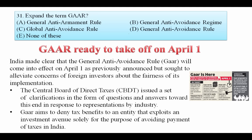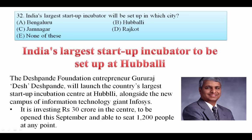Expand the term GAAR. GAAR stands for General Anti-Avoidance Rules. It is going to take effect from 1st April. The aim of this rule is to deny tax benefits to entities that exploit an investment avenue solely for the purpose of avoiding payment of taxes in India.